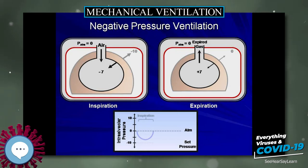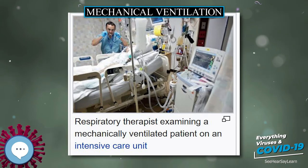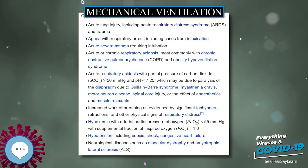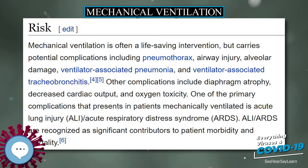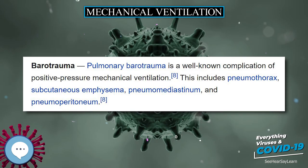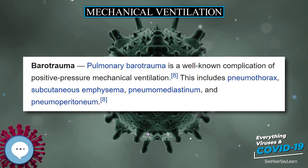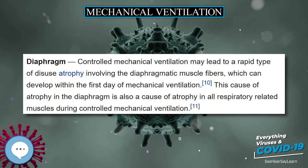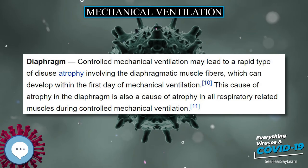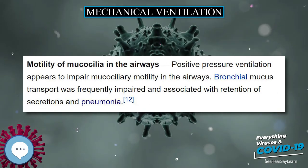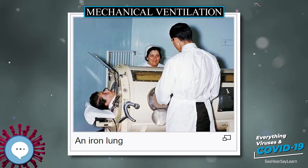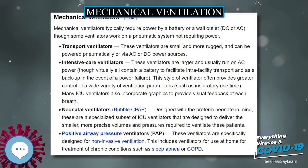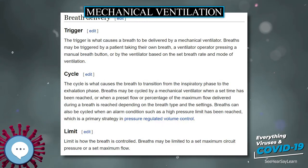Ventilator-associated lung injury, VALI, refers to acute lung injury that occurs during mechanical ventilation. It is clinically indistinguishable from acute lung injury or acute respiratory distress syndrome, ALI/ARDS. Controlled mechanical ventilation may lead to a rapid type of disuse atrophy involving the diaphragmatic muscle fibers, which can develop within the first day of mechanical ventilation. This atrophy also affects all respiratory-related muscles. Positive pressure ventilation appears to impair mucociliary motility in the airways, and bronchial mucus transport was frequently impaired and associated with retention of secretions and pneumonia.